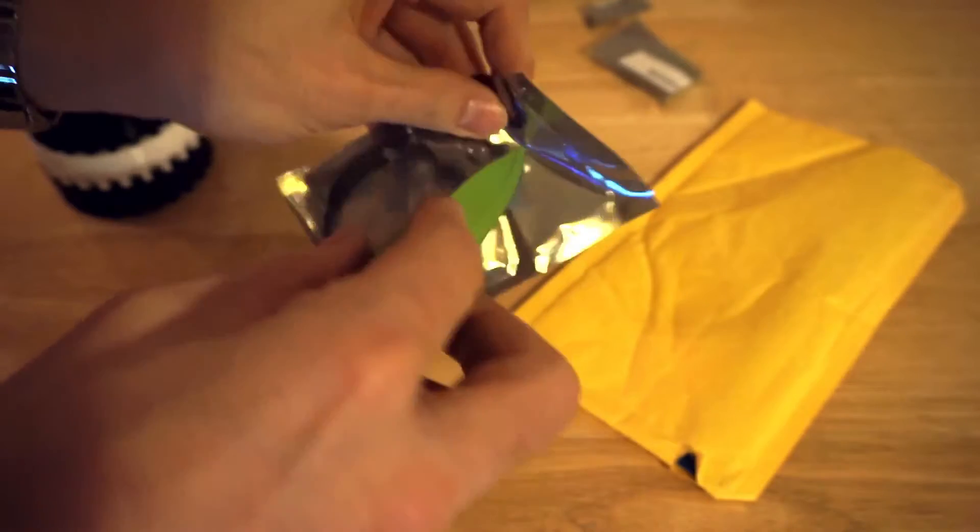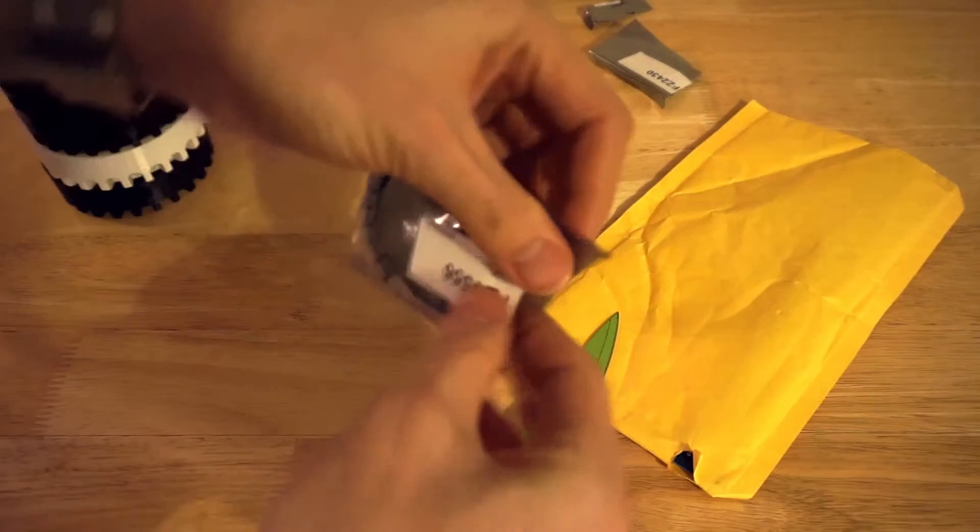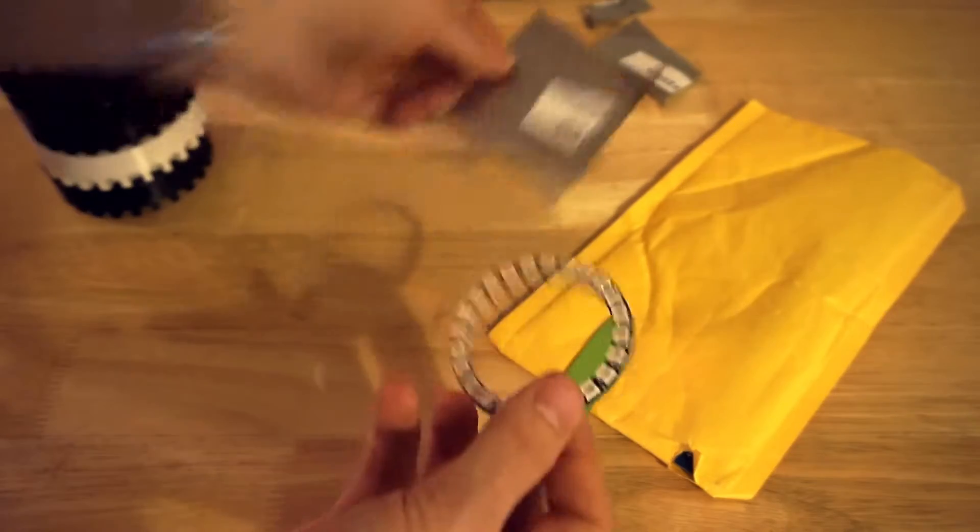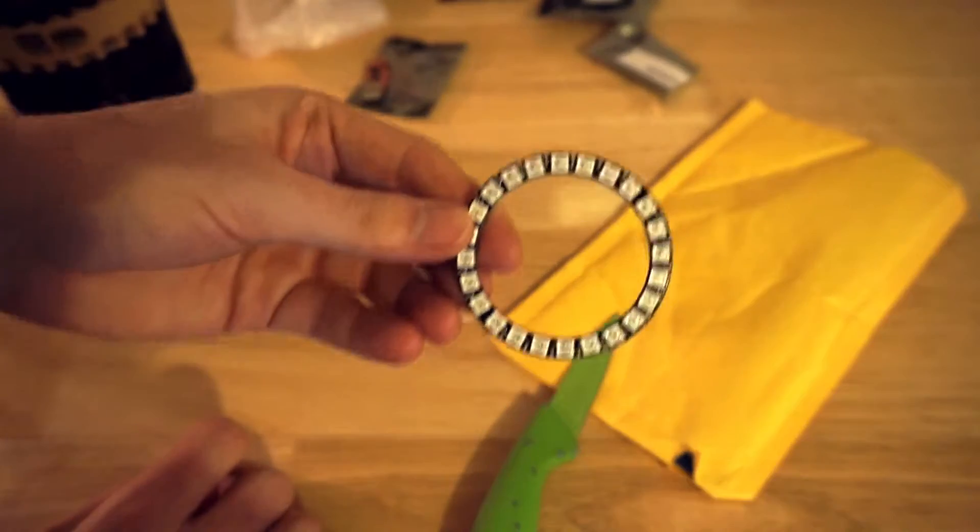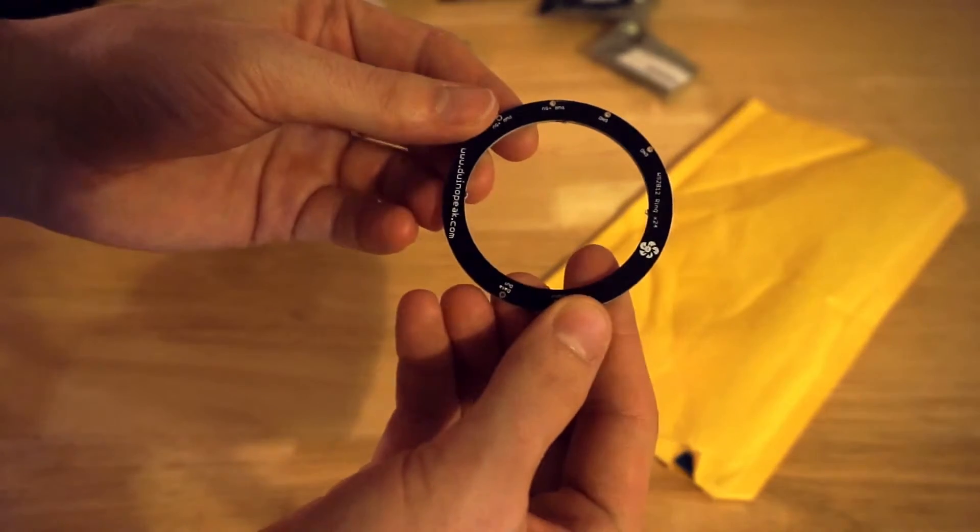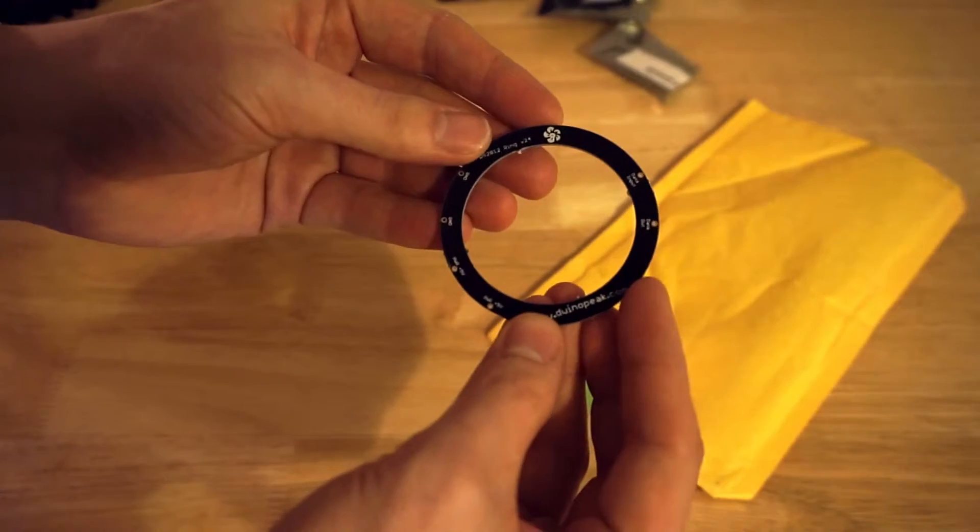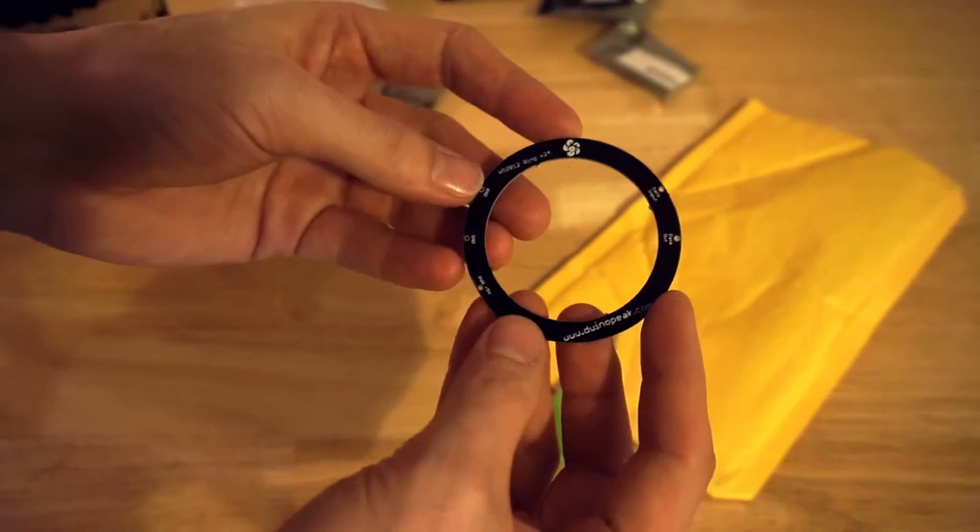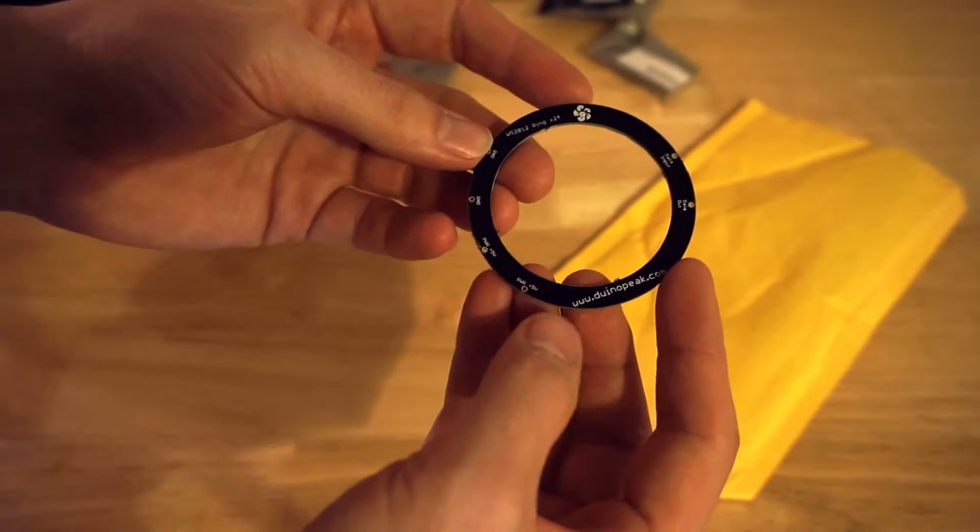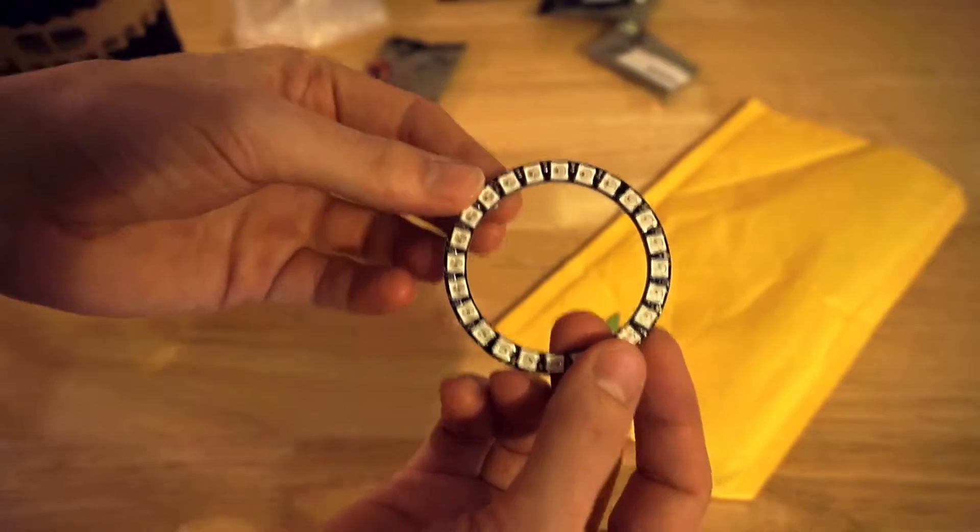I'll get this open. We call these 24 bit or 24 pixel Neo pixel ring. Similar to all the other Neo pixel rings you get. You wire it up. You've got voltage in, voltage out. A data pin in and a data pin out if you're going to daisy chain them up.